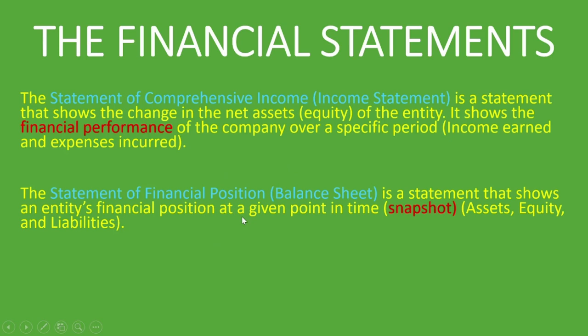For example, a statement of financial position for the year ended 28 February 2020 shows the assets, equity, and liabilities at that specific date. But the statement of comprehensive income for the same period covers the 12 months preceding that date — from 1 March 2019 to 28 February 2020. That is the key difference between the two statements.